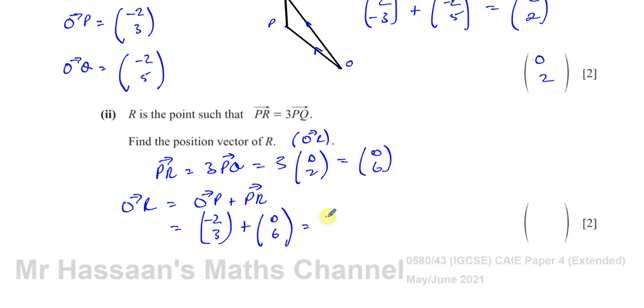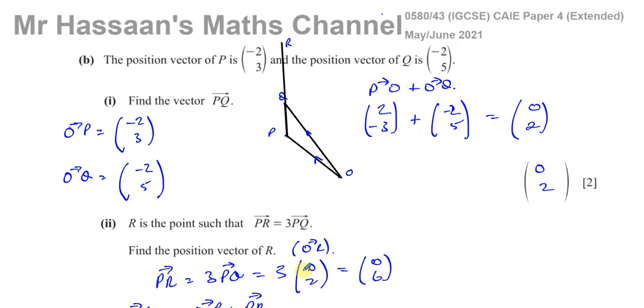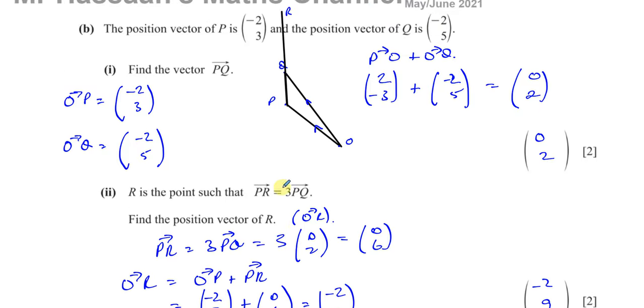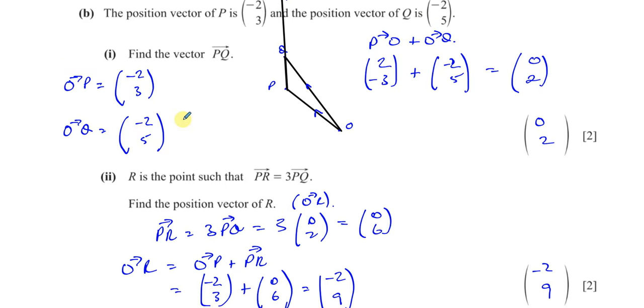Adding them together gives (-2, 9). So negative 2, 9 is the answer to that part of the question — question 4, part B1 and B2, working with column vectors.